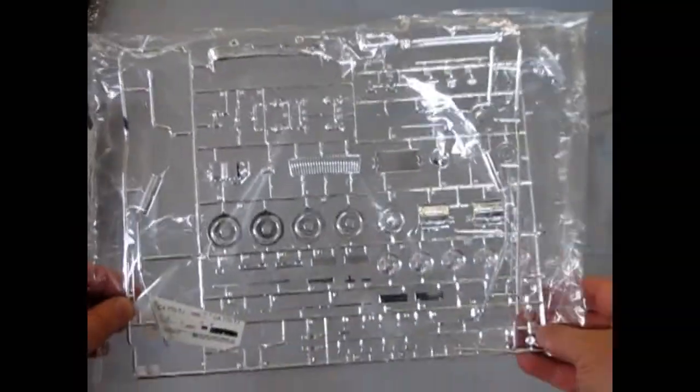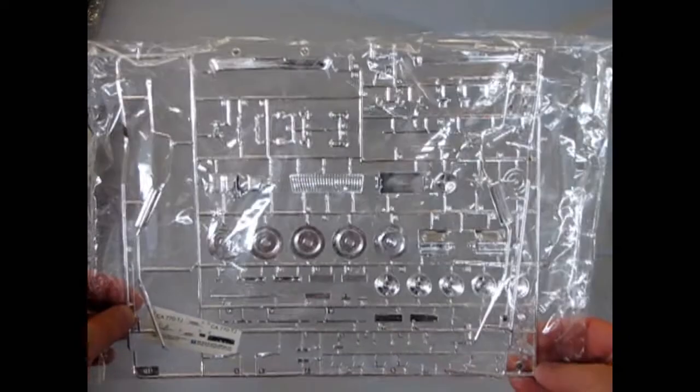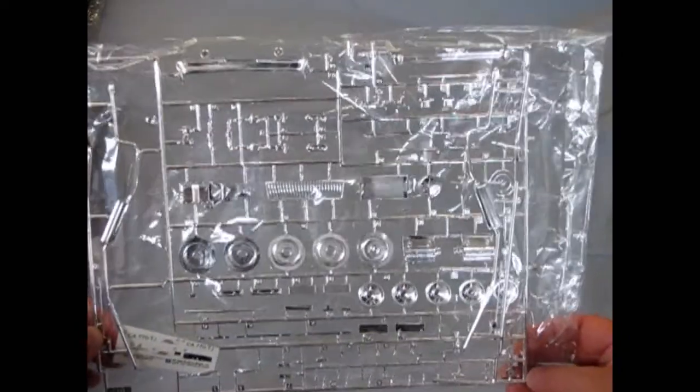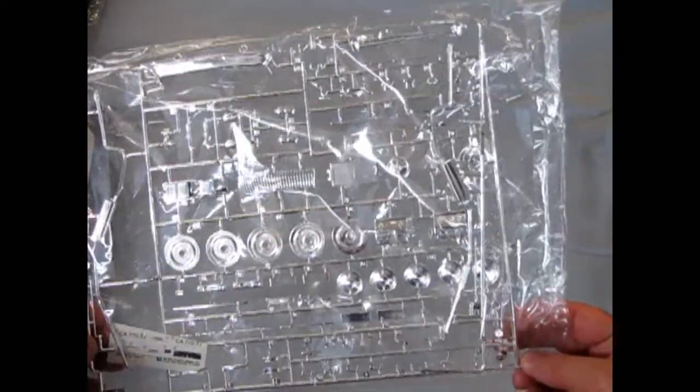And finally, or not so finally, we have our chrome parts tree. Many, many parts, including the engine and a nice grill with separate teeth that you can see through. For that added bit of realism.